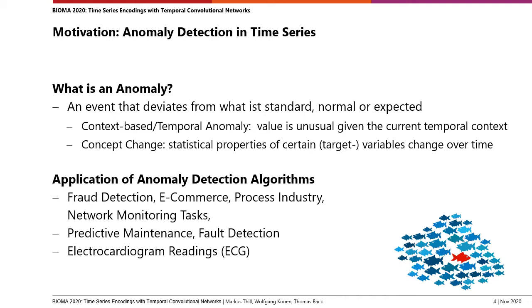A context-based anomaly is when we have a value which is unusual given the current temporal context. Some people also consider concept changes as anomalies — a concept changes when a statistical property of a certain target variable changes over time. There are many applications of anomaly detection, for instance in fraud detection, network monitoring, and also for medical purposes such as ECG data.